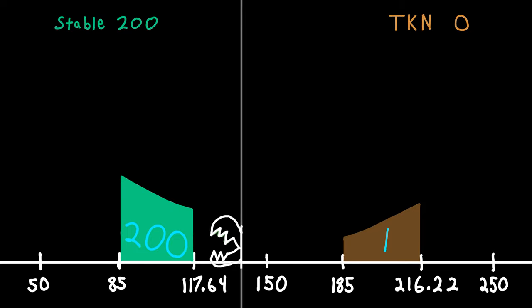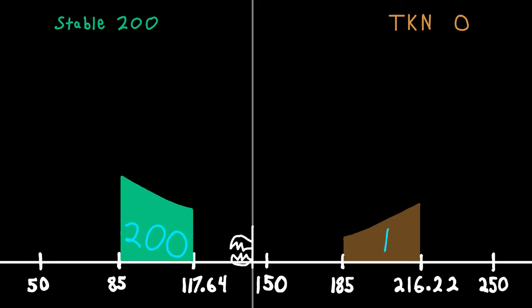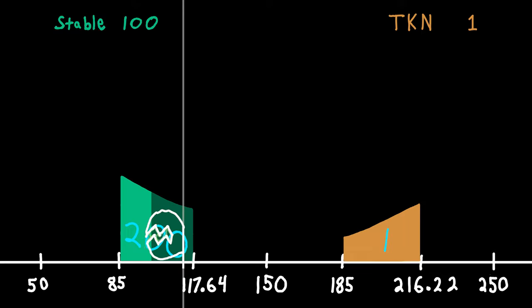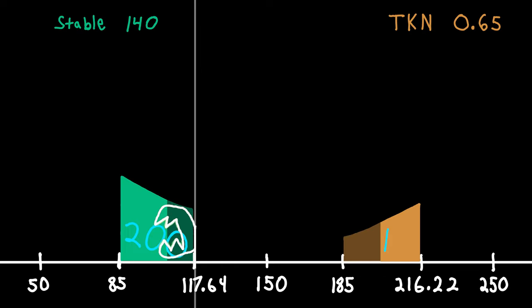Each incremental buy of TKN will go to fill the sell range from furthest to closest until 1 TKN is in the sell range. At the exact moment when enough stable has been spent for 1 TKN, the sell range will be completely refilled.